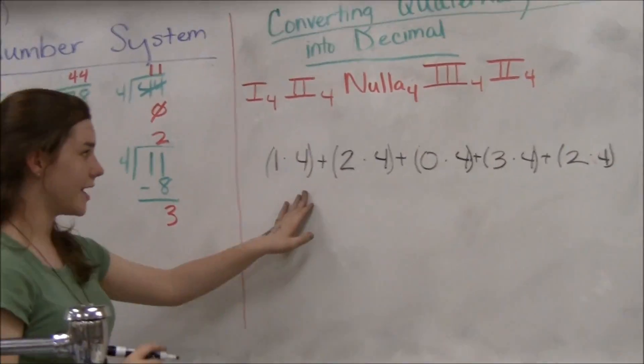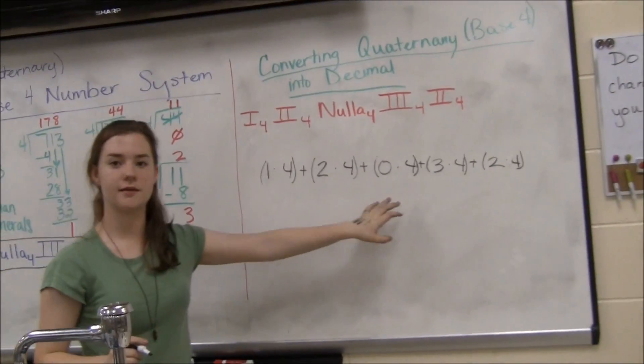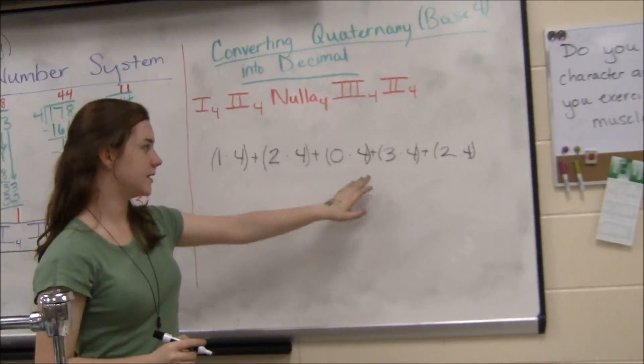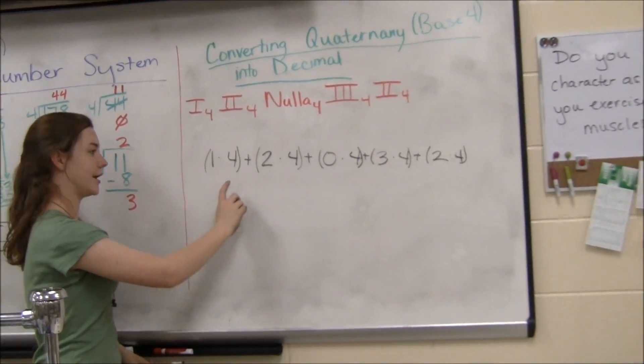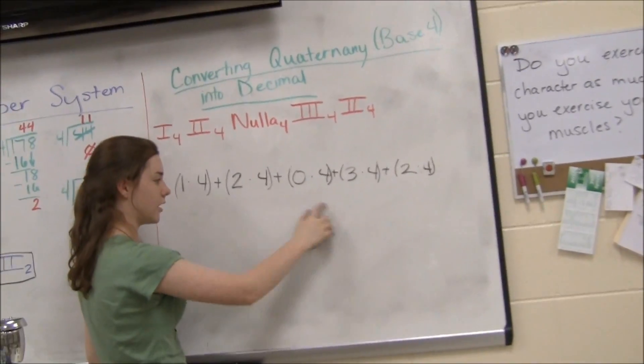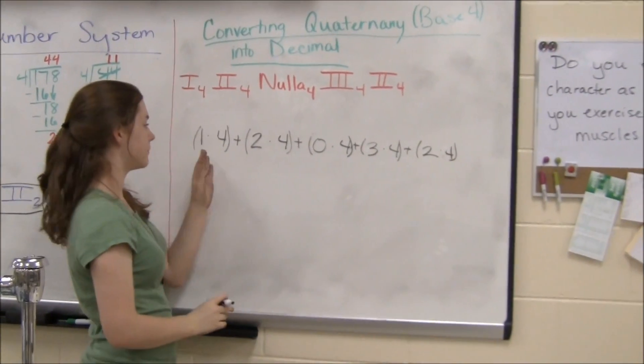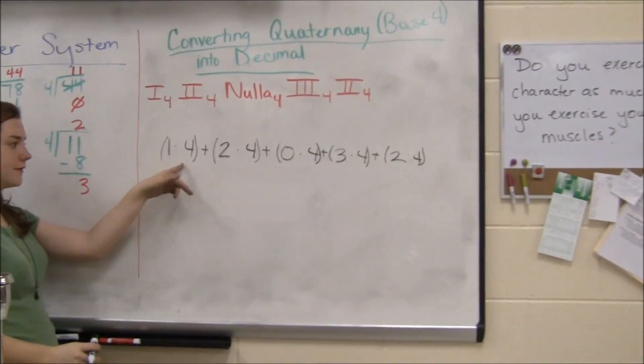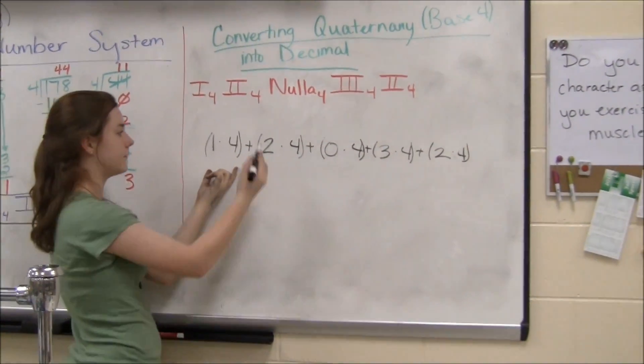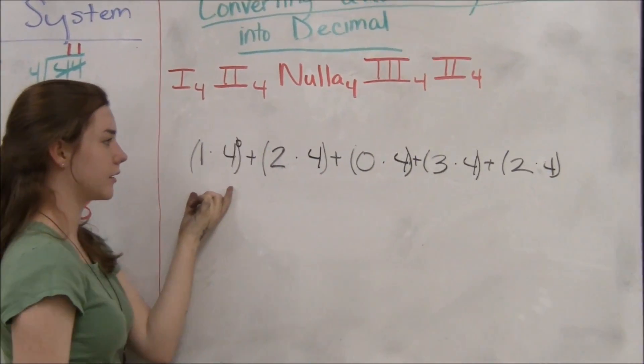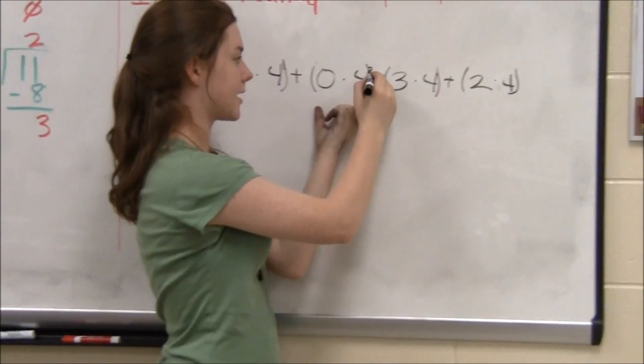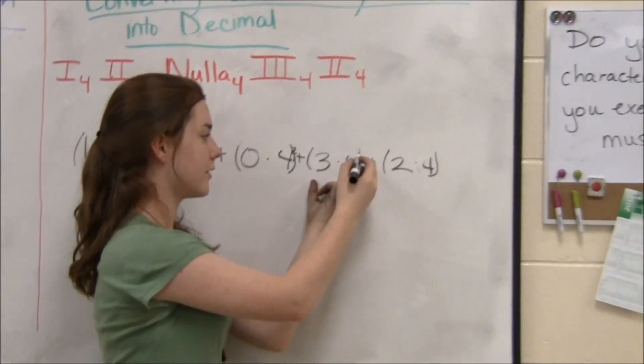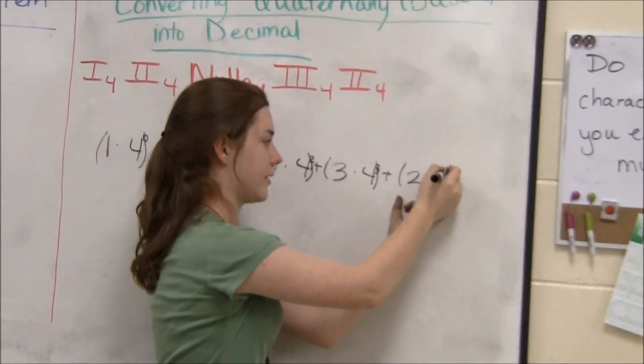Before we add and multiply these together, the 4, since it's the base, will each be put to an exponent depending on their location. For example, this first term, the 4 will be to the 0th power, second term, first power, third term, second power, fourth term, third power, and fifth term, fourth power.